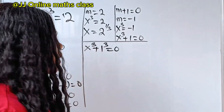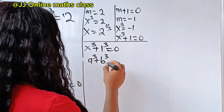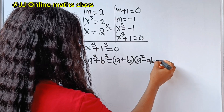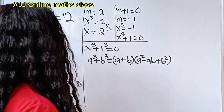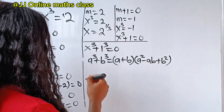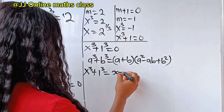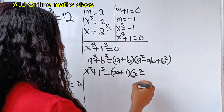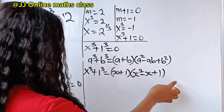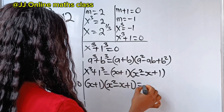Let's recall the algebraic identity: a cubed plus b cubed equals a plus b, multiplied by a squared minus ab plus b squared. In our case, a equals x and b equals 1. Substituting, x cubed plus 1 cubed equals x plus 1, multiplied by x squared minus x plus 1, which equals 0. So we have x plus 1, multiplied by x squared minus x plus 1, equals 0.